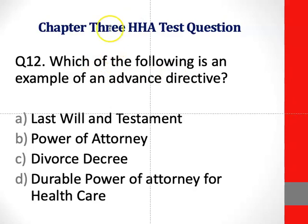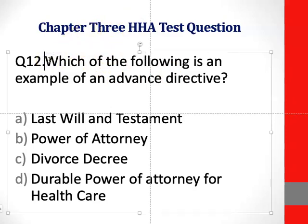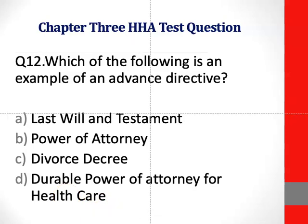Question 12: Which of the following is an example of an advanced directive? The correct answer is D — durable power of attorney for health care.